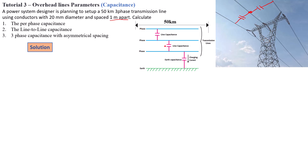Capacitance is a key factor in the overall behavior of a transmission line, affecting its charging current, power loss, voltage regulation, and system stability. It plays a crucial role especially in long-distance, high-voltage transmission lines, as we'll see when we start calculating transmission line models using pi methods and so forth. Now let's go ahead and start solving our problem.